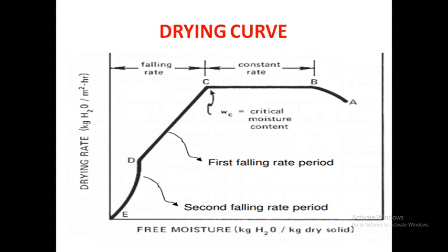Rate of drying in falling rate period. Rate of drying is governed by the internal flow of liquid or vapour. This point is represented by C in the figure. This is falling rate period.